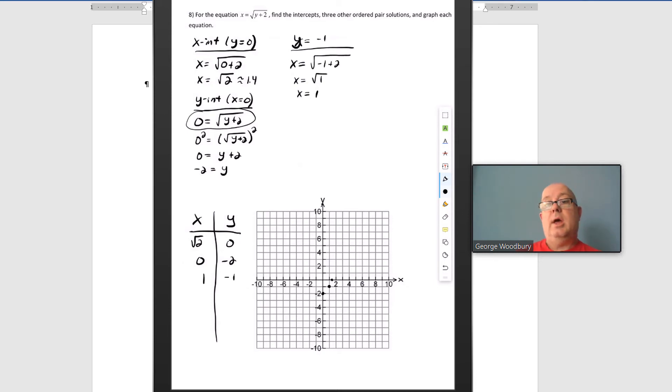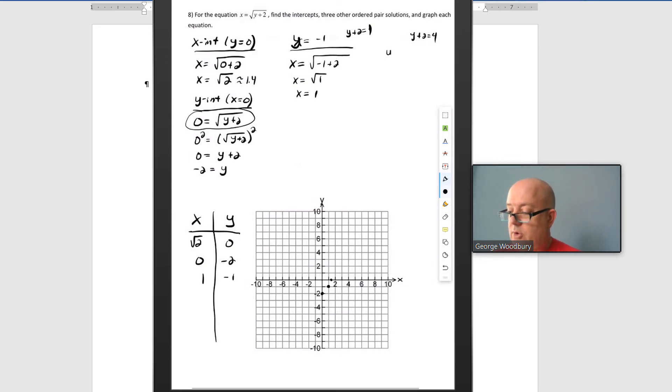The next point, I know the square root of 4. What makes y plus 2 equal to 4? I know that that's y equals 2. So I'm going to try that value. y equals 2, x equals root 2 plus 2, or root 4. Square root of 4 is 2. So 2 comma 2 is on this function.